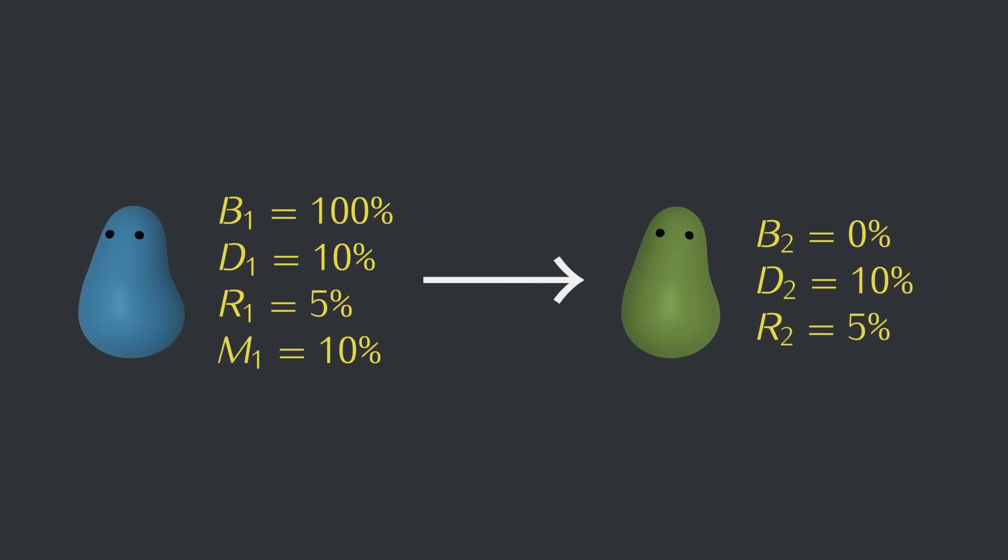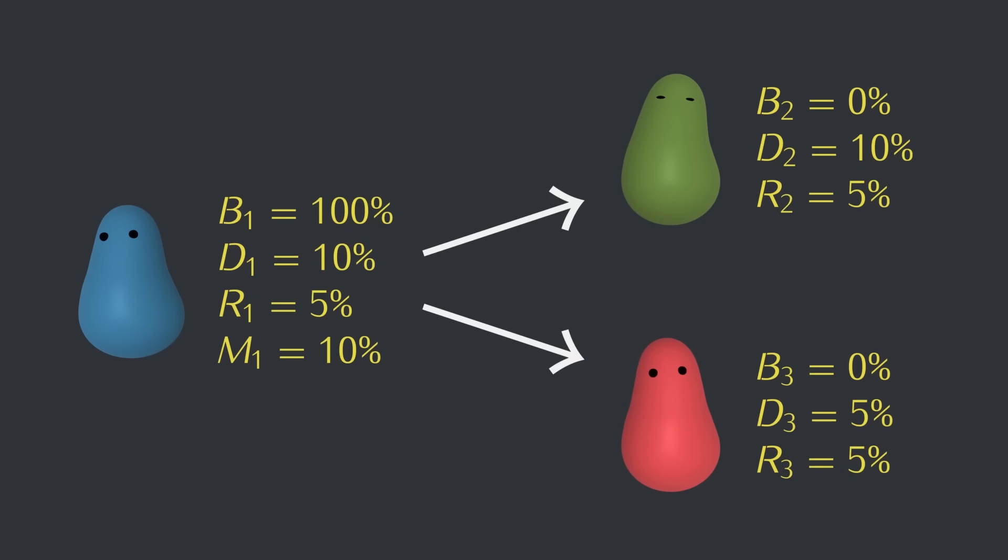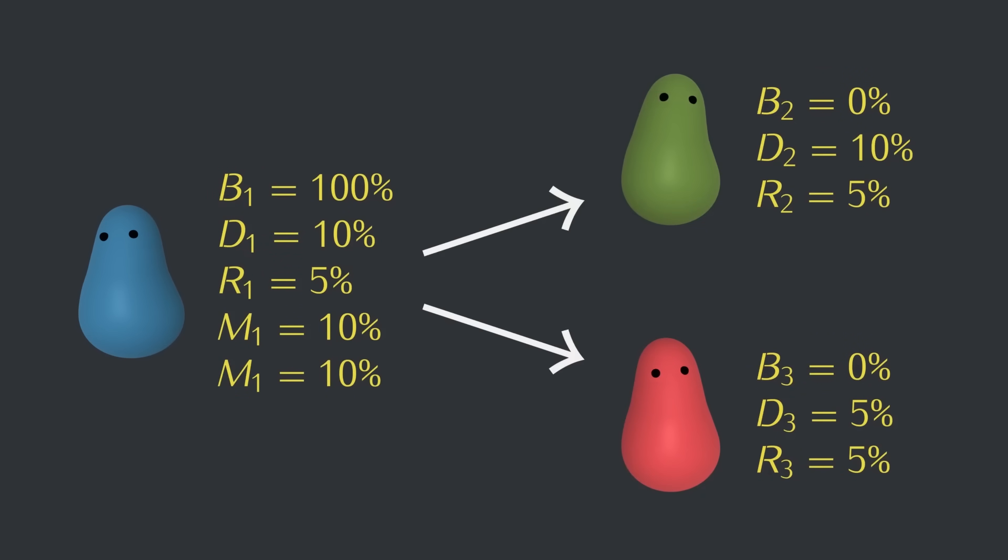First, let's say blue can also mutate into this red kind, also with a 10% chance each replication. And we have another labeling issue here. Both of these mutation chances belong to the blue kind of creature, so they should keep the label one, but since there are two of them, we should add another label to tell them apart somehow. The first mutation chance leads to green creatures, so we can add a two to keep track of that fact. And this second mutation leads to the red kind of creature, which we can label with the number three.